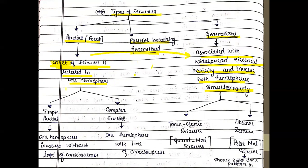Now partial has two types — simple partial or complex partial. If consciousness is not lost, it is simple partial. And if there is altered consciousness, then that is complex partial. So one hemisphere involved is partial; without loss of consciousness it is simple; one hemisphere involved with loss of consciousness is complex partial epilepsy.